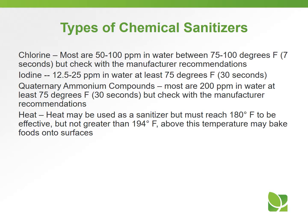Types of chemical sanitizers include: chlorine, with 50 to 100 parts per million as the recommended concentration, and water between 75 to 100 degrees Fahrenheit; iodine, at 12.5 to 25 parts per million; and quat, most are 200 parts per million in water, but some can be higher or lower — check manufacturer recommendations. Heat can also be used as a sanitizer, but must reach at least 180 degrees to be effective, but not greater than 195 degrees, as that can bake food onto the surface.